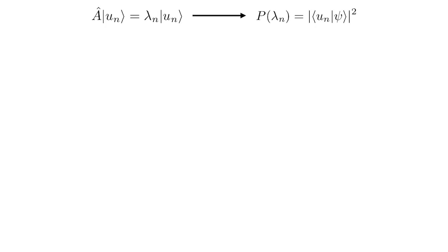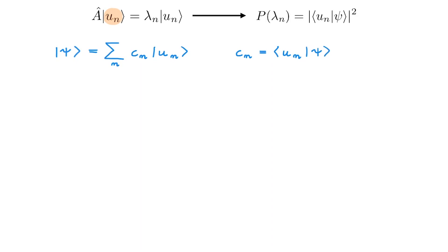The next thing I want to look at is how the state ψ of the system encodes the possible outcomes of a measurement. Remember that we can always write the state ψ in a complete basis of our state space, and that the eigenstates un of a Hermitian operator like A provides such a basis. That means we can write ψ in the u basis, and these expansion coefficients C — the representation of ψ in the u basis — are given by the projection of ψ onto the u basis states.